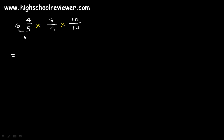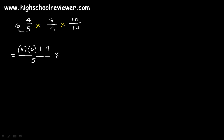First, we are going to multiply the denominator by the whole number. We have here 5 multiplied by 6, and then their product will be added to the numerator — plus 4. They will now become the new numerator. And for the new denominator, just copy the old, so this would still be 5. Then proceed with multiplication: 3 over 4, 10 over 17.